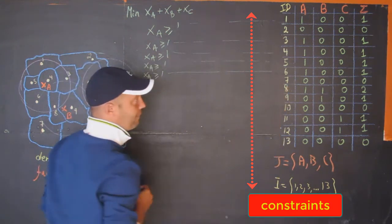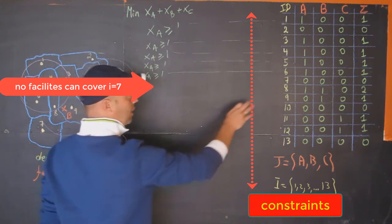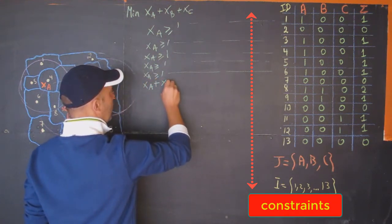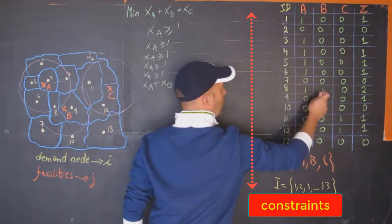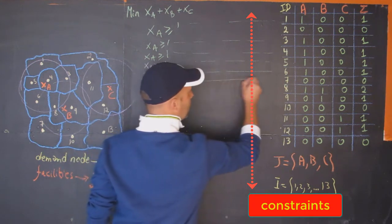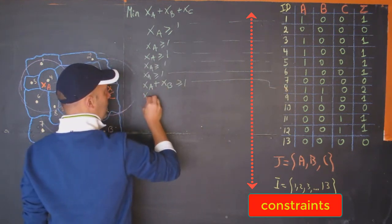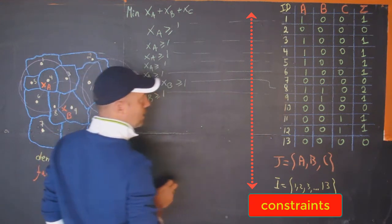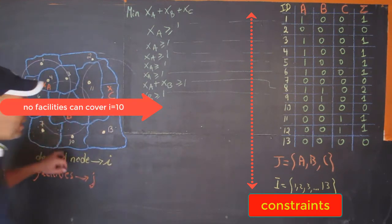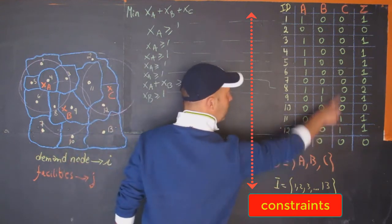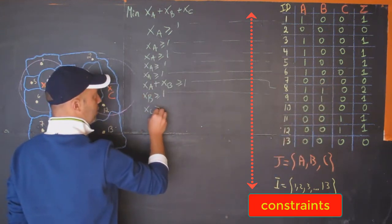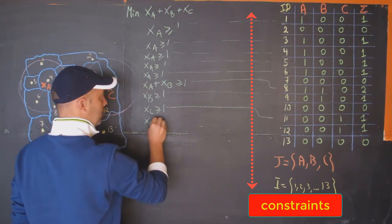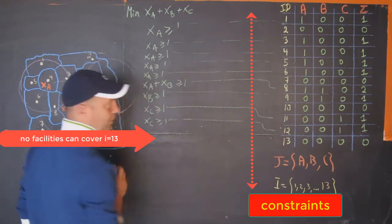For the seventh one, we don't have any facilities in coverage. For demand node 8, we have x_A plus x_B because we have one for A and one for B. For demand node 9, we have x_B greater than or equal to one. For demand node 10, we don't have anything. For node 11, we need x_C greater than or equal to one. For 12, we have x_C greater than or equal to one. For 13, we don't have anything.